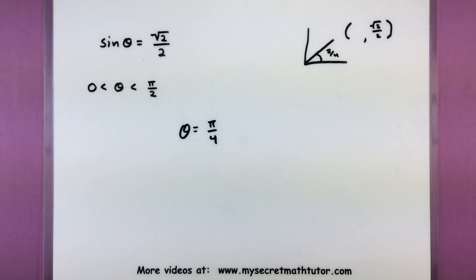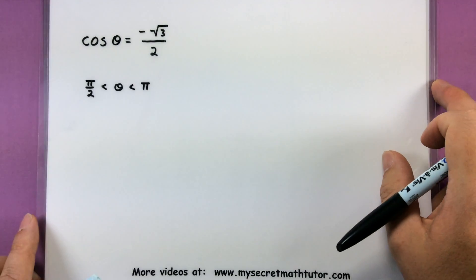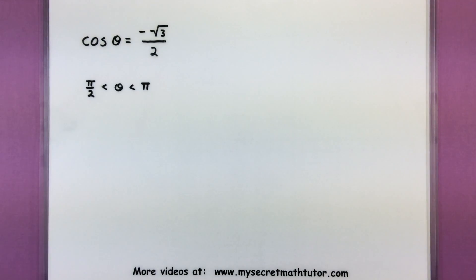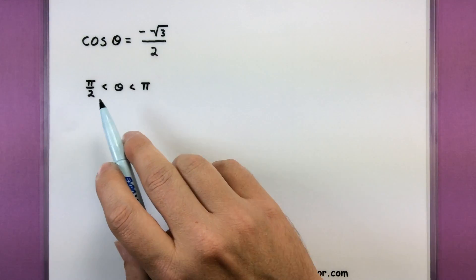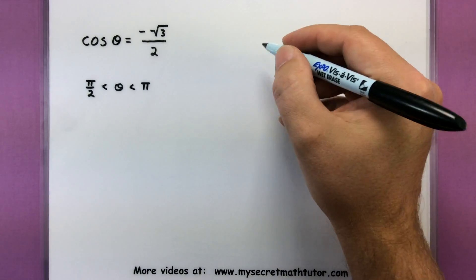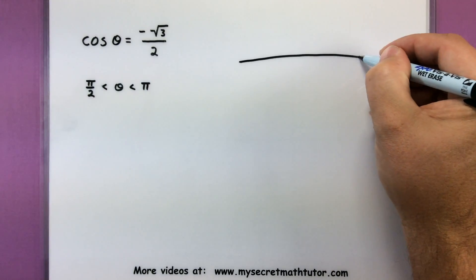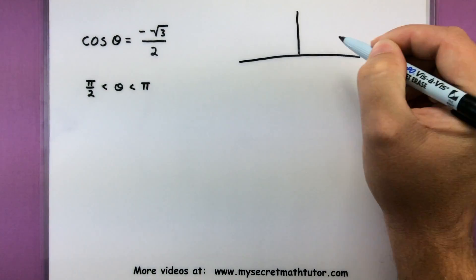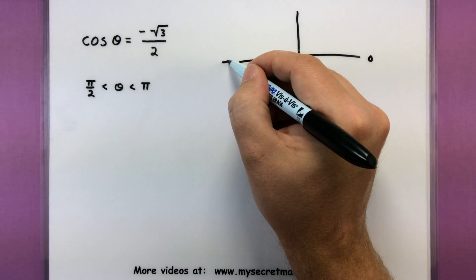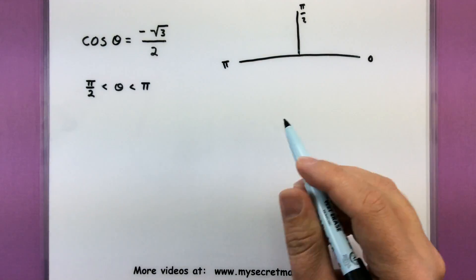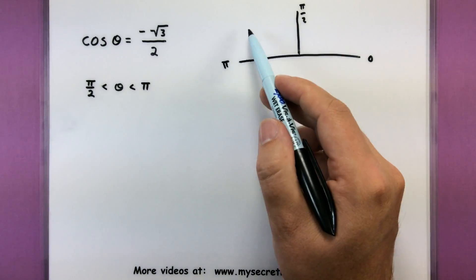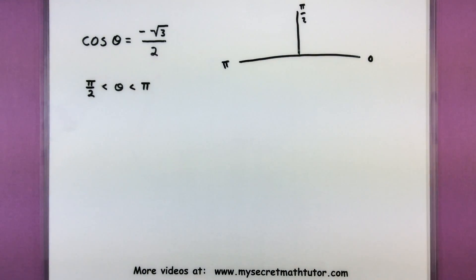Let's try another one of these. This one says cosine of θ is equal to negative square root of 3 over 2. And now our angle lives somewhere between π over 2 and π. So once again let's go ahead and just sketch out where this angle lives. So this would be 0 degrees. This is between π over 2 and π we're dealing with the second quadrant over on this side.